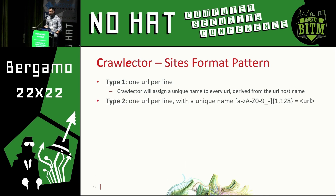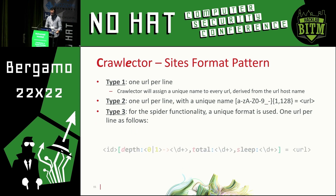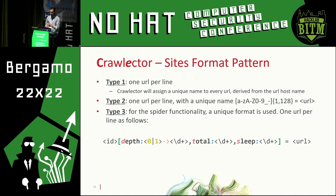Type two is where you give it your own ID. It's a design decision that you are allowed to give the same IDs for the same domain, but during evaluation the framework will assign a unique ID, so there's no collision. Type three is specific to the spider functionality. It has a format where the ID follows the same type two format, but between brackets you've got three conditions: depth, total, and sleep.